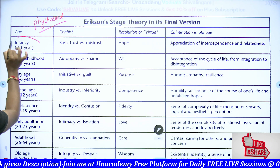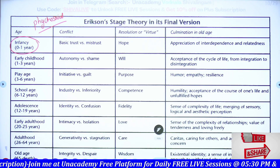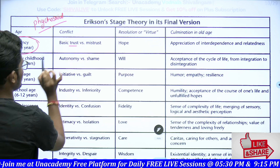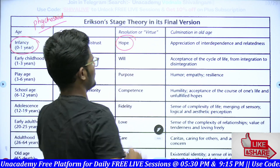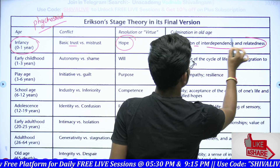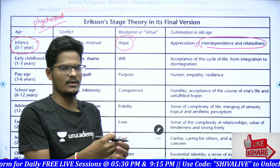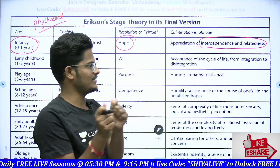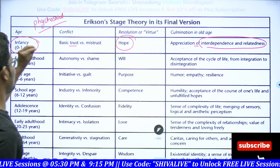At zero to one year, the infancy stage, the conflict is trust versus mistrust. The virtue here is hope — that I can do something. There is an appreciation of interdependence and relatedness. For example, when a kid does something, parents are going to appreciate him, saying 'mama', 'dada' — this is mainly what happens in the beginning stage.